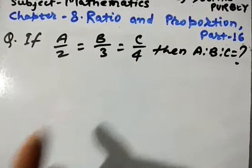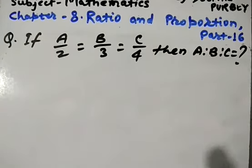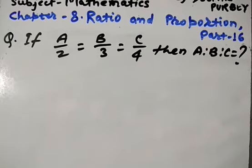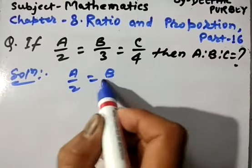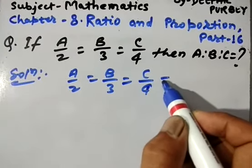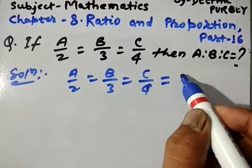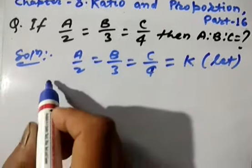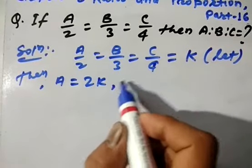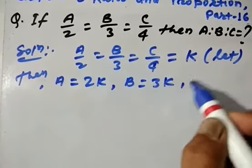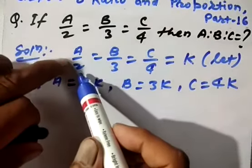Now let's look at another question: if a/2 = b/3 = c/4, then a ratio b ratio c — that is, a is to b is to c — is equal to what? This question can also be solved by two methods. Let a/2 = b/3 = c/4 = k. Then a = 2k, b = 3k, and c = 4k.